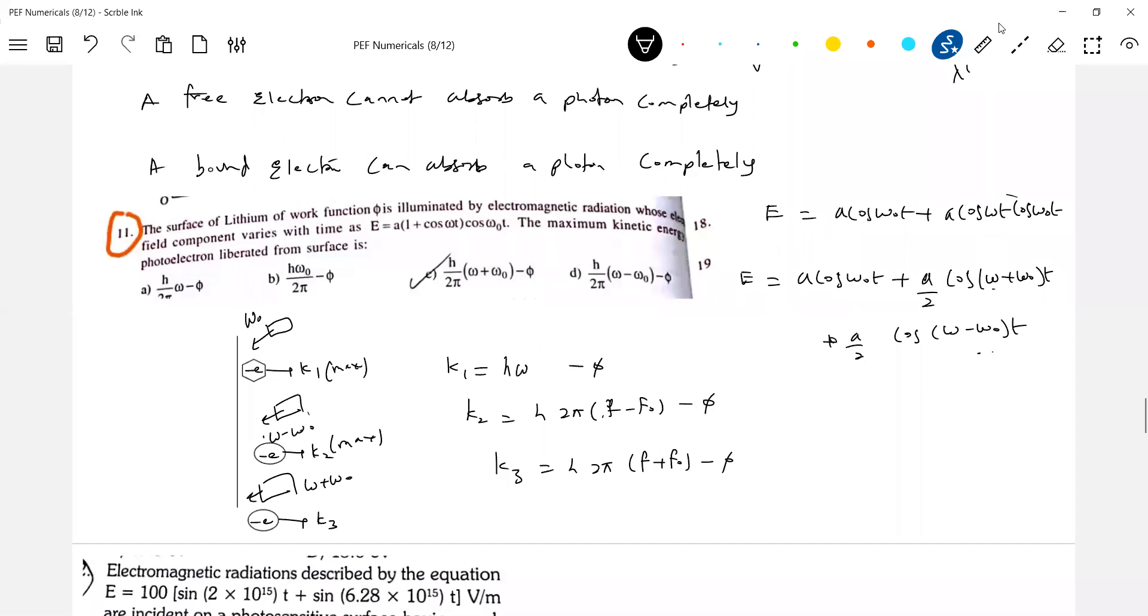This will be omega not by 2pi. Yeah. 2pi will write it here. Denominator should come. Let it be in terms of omega only. Omega minus omega not. Okay, I made correction. Yeah. So shall I write K max only rather than writing only K one.